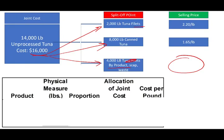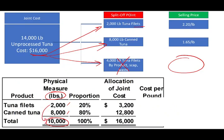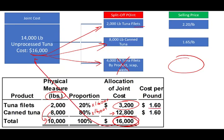One way is to use physical measures — here, pounds. We're not going to count the scrap because there is no value in it. So we have 2,000 pounds of tuna fillet and 8,000 pounds of canned tuna, totaling 10,000 pounds. The proportions are 20% for tuna fillet (2,000 ÷ 10,000) and 80% for canned tuna (8,000 ÷ 10,000). We multiply these by the $16,000 joint cost: 20% × $16,000 = $3,200 allocated to tuna fillet, and 80% × $16,000 = $12,800 to canned tuna. The cost per pound is $1.60 for each.